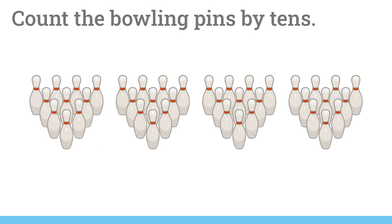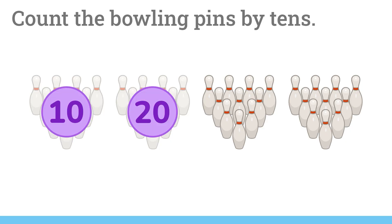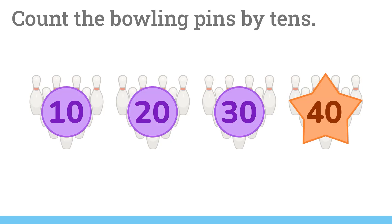Count the bowling pins by tens. Each set of bowling pins is a group of 10, so let's skip count by tens. 10, 20, 30, 40. Awesome! There are 40 bowling pins in all.